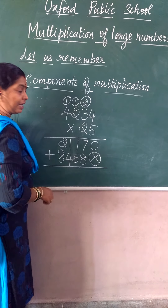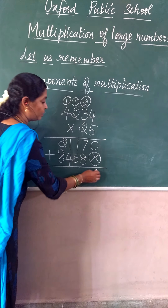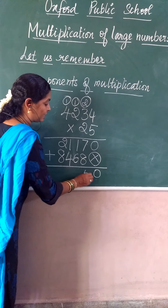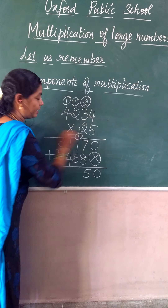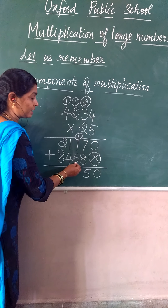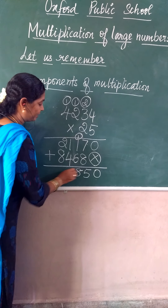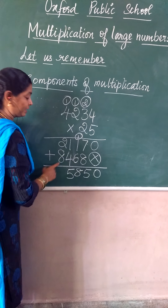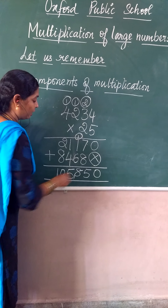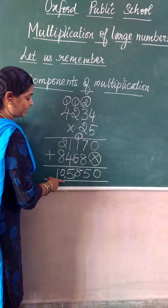Now after multiplying, we are going to add the two partial products. 0 plus 0 is 0. 7 plus 8 is 15, so write 5 and carry forward 1. 1 plus 1 is 2, then 2 plus 6 is 8. 1 plus 4 is 5. And 2 plus 8 is 10. So what value did I get? According to place values, the final answer is 1,05,850.